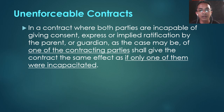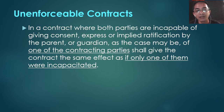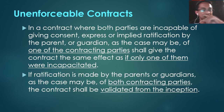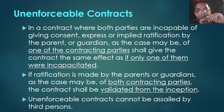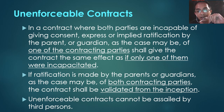In contracts where both parties are incapacitated, ratification can be made by their parents or guardians. When one party is ratified by a parent or guardian, and only one remains incapacitated, the unenforceable contract becomes a voidable contract. If ratification is made by the parents or guardians of both parties, then the contract becomes valid — all defects are removed. Unenforceable contracts cannot be assailed by third persons, only by the minors, the insane, or their parents and guardians.